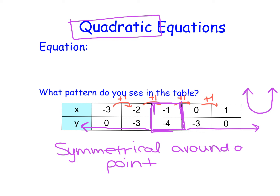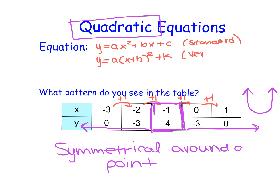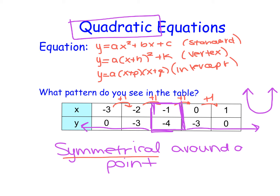We had a couple of different forms of quadratics, and you'll be able to pick which form you want. We had standard form: y equals ax squared plus bx plus c. We also had vertex form: y equals a times the quantity x plus h, squared, plus k. And then we had intercept form: a times x plus p times x plus q. You get to choose which equation type you want to write it into.